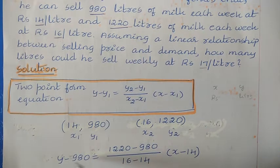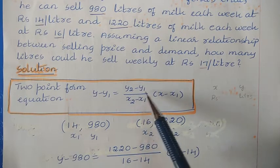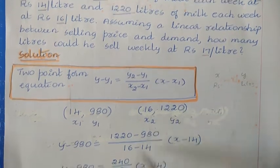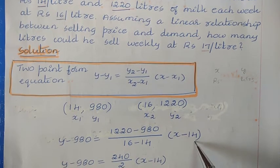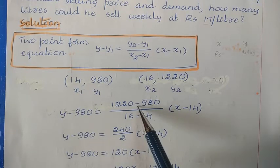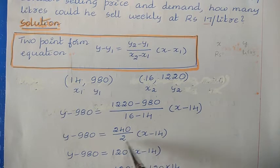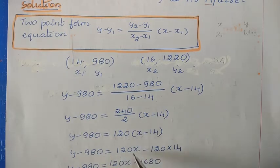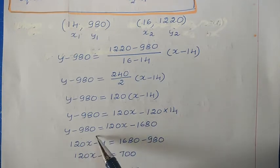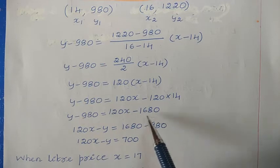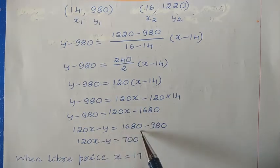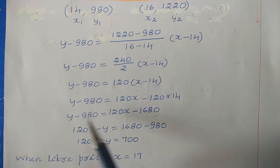Taking (x1, y1) = (14, 980) and (x2, y2) = (16, 1220), substituting into the two-point formula: y minus 980 = (1220 minus 980) divided by (16 minus 14), into (x minus 14). This gives y minus 980 = 240 divided by 2, into (x minus 14), so y minus 980 = 120(x minus 14).